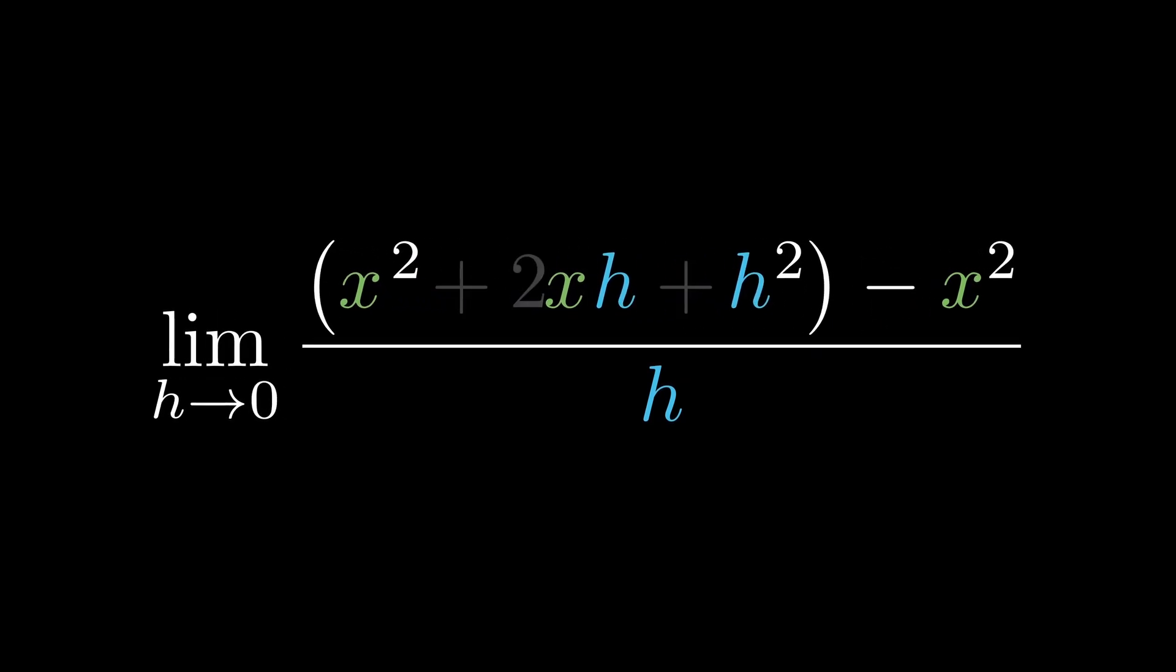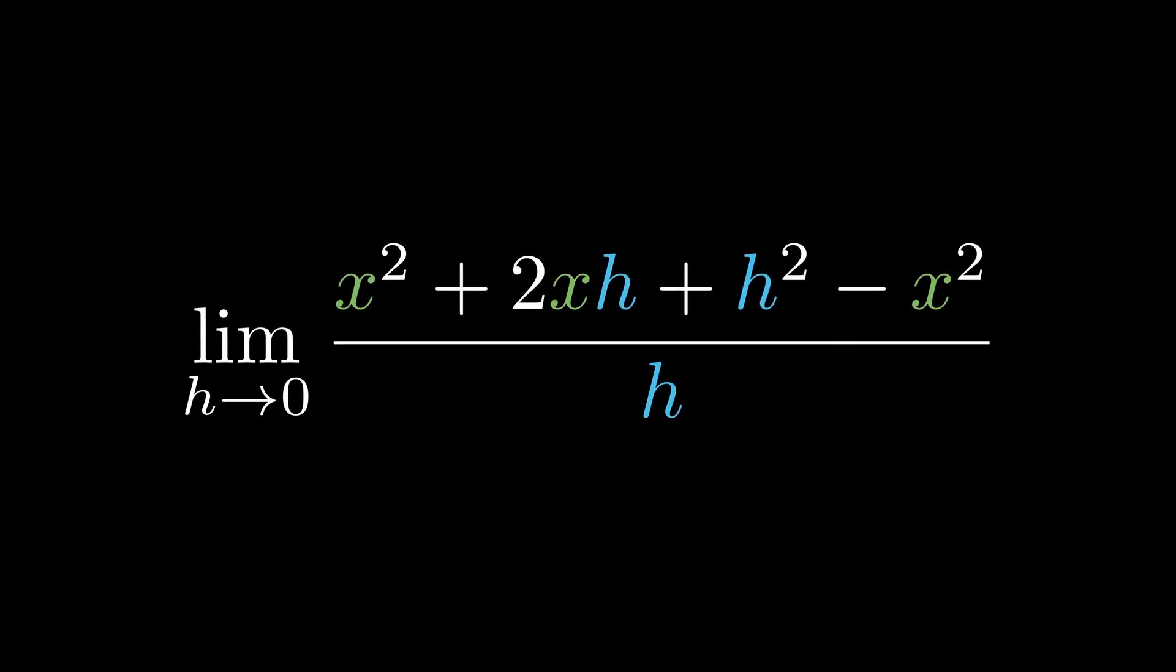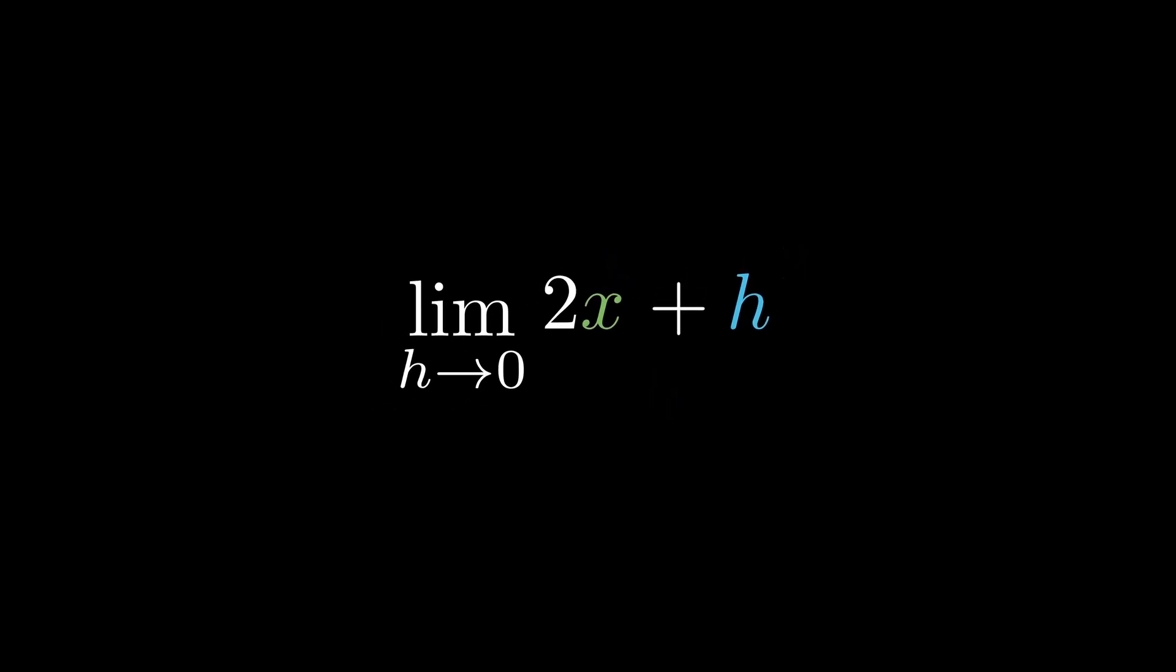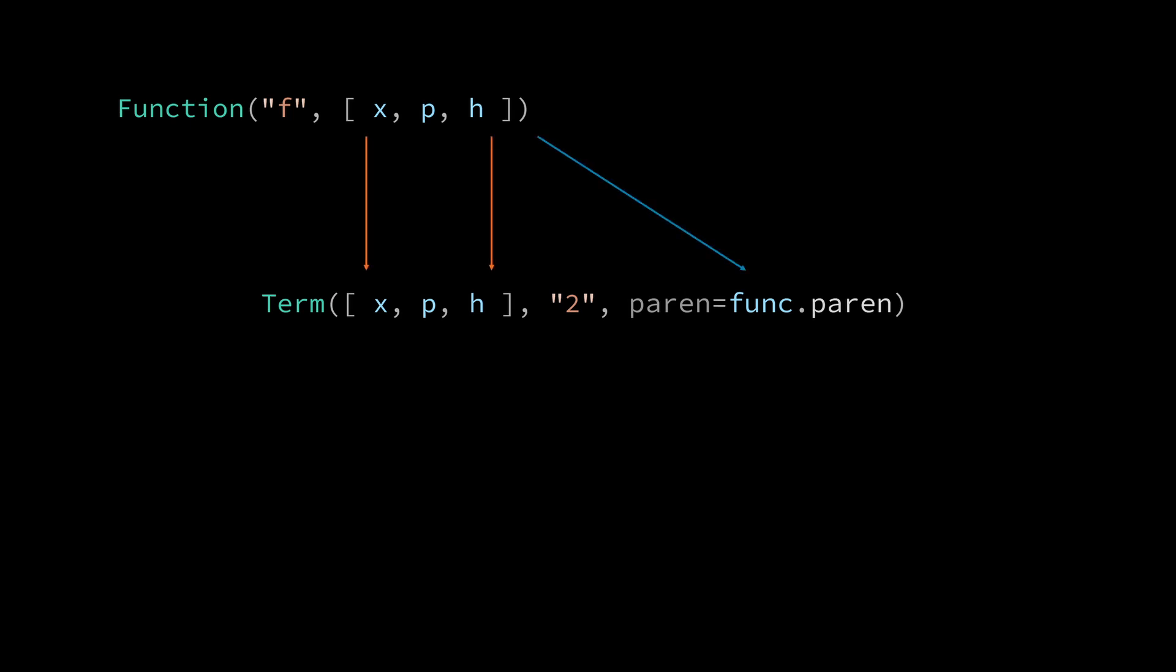Today we will animate the limit derivative of x squared using an extension that I'm building for Manim called Reactive Manim. Reactive Manim allows us to construct two math expressions from the same variables. This creates a correspondence that lets us animate one expression into the next automatically.